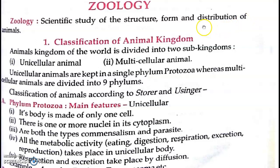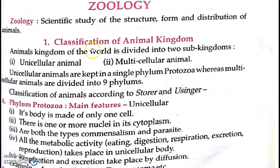Distribution is also studied — like whether it is living in water or land. Whether it lives in water, sea, or on land. So basically in zoology, we study any animal's structure, its form, what type it is, and its distribution.